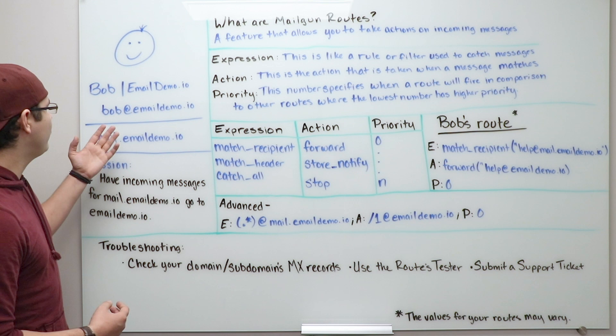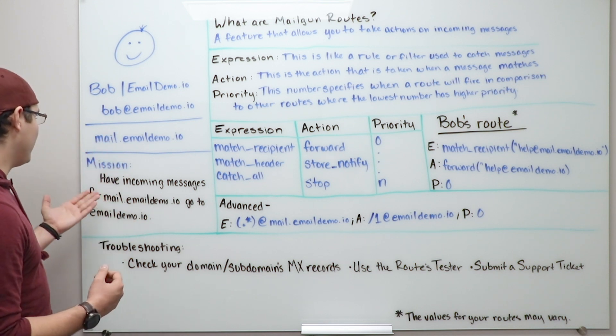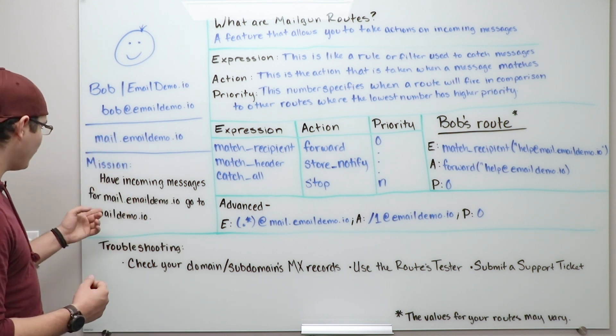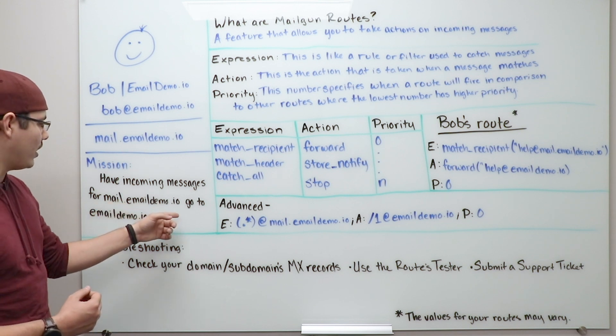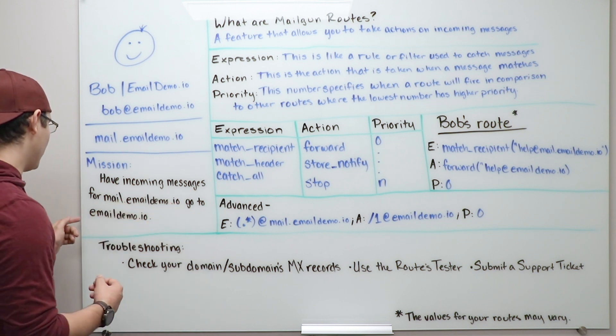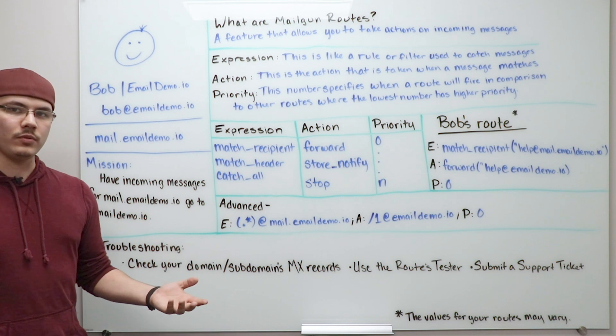So take Bob for instance. His mission today is to have any incoming messages for his subdomain mail.emaildemo.io and have them go to emaildemo.io, which is his route domain.